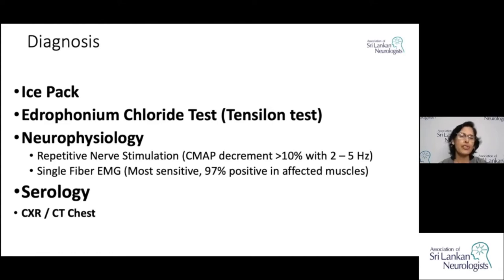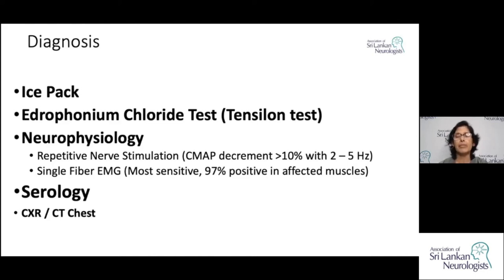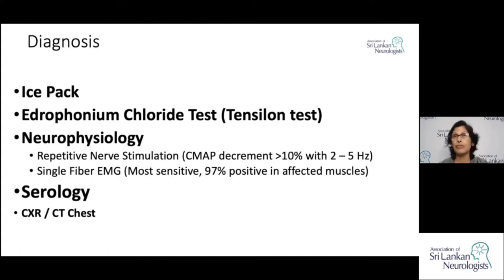Regarding neurophysiology, there are two forms of tests. Repetitive nerve stimulation may show more than 10% decrement of the compound muscle action potential with 2 to 5 Hz stimulation. Single-fiber EMG is a special technique with very high sensitivity, but it requires expertise and experience.